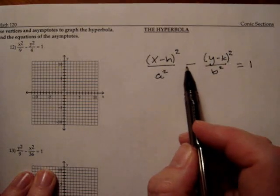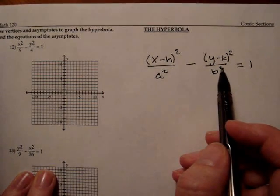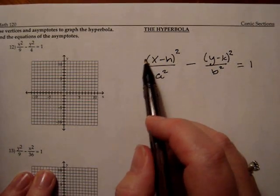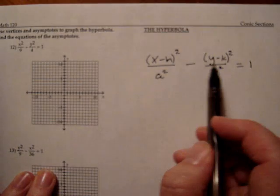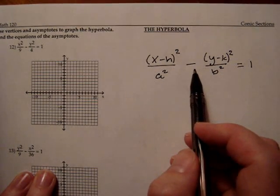Now on this one, notice hyperbola has the minus in between the x squared and y squared portion. And since the x squared portion has the positive minus the y squared portion has the negative in front of it, that means this hyperbola will open to the left and right.